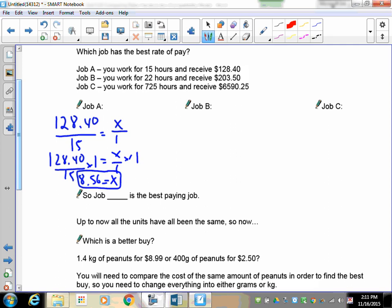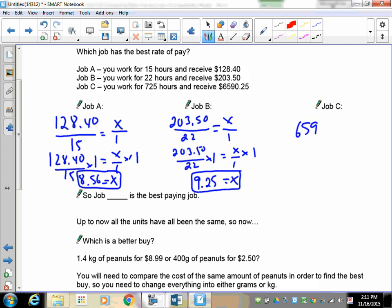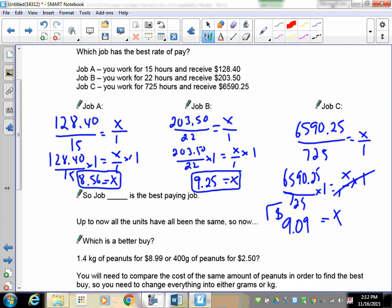Let's take a look at the next one. We have $203.50. That's for 22 hours. We want to know how much it is for one. So $203.50 over 22 times 1 is x over 1 times 1. So in this case, x comes out to be $9.25. So there's your second rate of pay for B. Let's take a look at C. We have $6,590.25. And that's for 725 hours. We want to know how much it is for one hour. So 6590.25 over 725 times 1 is x over 1 times 1. Please cancel, leaving you with x. And this one is $9.09. So there is your third rate of pay. So which one is the best rate of pay? Job B.